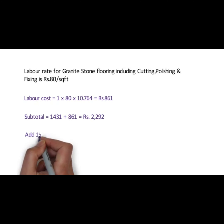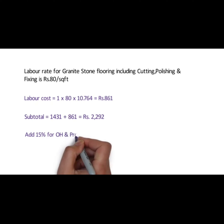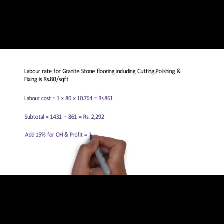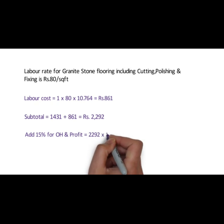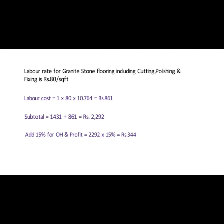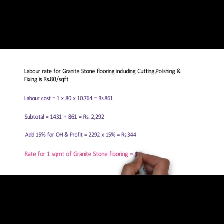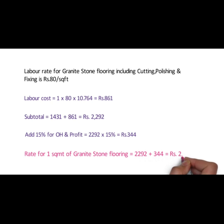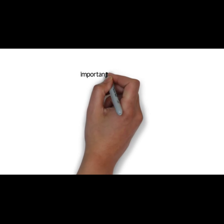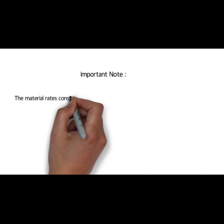Add 15% for overhead and profit: 2292 into 15% equals 344 rupees. Now the rate for one square meter of granite stone flooring is 2292 plus 344, which equals 2636 rupees.